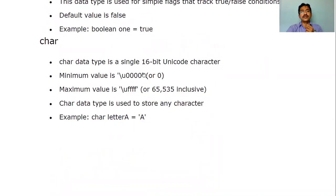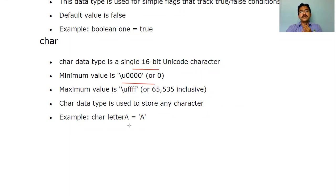The next data type is char — it stores single character values. The size is two bytes, which is 16-bit Unicode. The default value is '\u0000'. We can assign it like: char a = 'A'. We can assign capital A, small a, capital B, anything, but we have to assign a single character in single quotes.